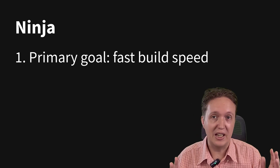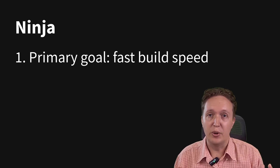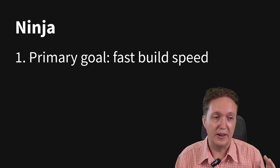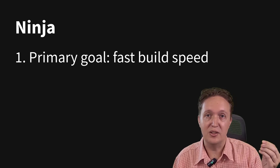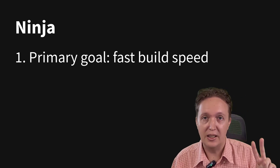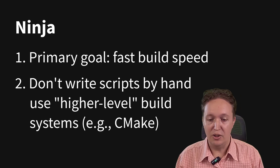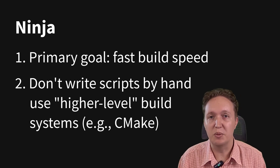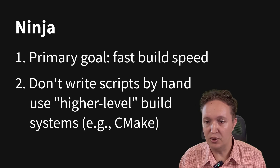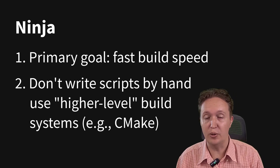So in order to achieve that, they have traded things like flexibility and scripting — they've traded scriptability for speed. And as a result of trading scriptability for speed, you're not supposed to write Ninja build scripts by yourself. Instead, you're supposed to use a higher level build system like CMake to generate them for you.